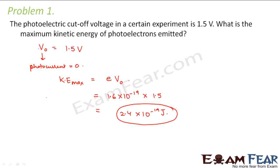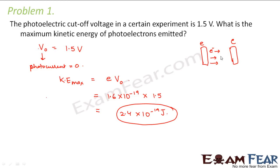This is the maximum kinetic energy of photoelectrons emitted, because this is the emitter and this is the collector. Photoelectrons are emitted from the emitter. When we say cutoff voltage, there is no photocurrent — no electrons are reaching the collector. Even the electron with maximum kinetic energy is not able to reach the collector. So the work done by the stopping potential equals the maximum kinetic energy of the photoelectron.